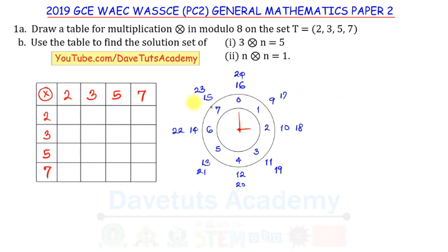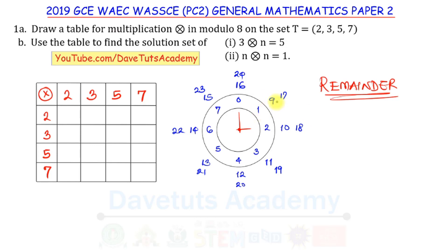This clock analogy helps us understand modular arithmetic. The key tool we use is the remainder. For example, to find 9 in modulo 8: 9 ÷ 8 = 1 remainder 1, so 9 ≡ 1 (mod 8). For 12: 12 ÷ 8 = 1 remainder 4, so 12 ≡ 4 (mod 8).